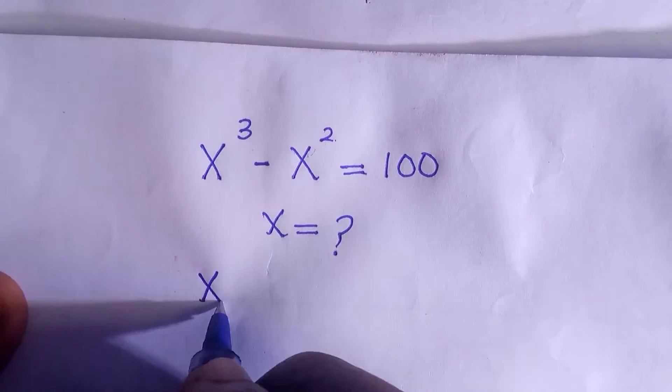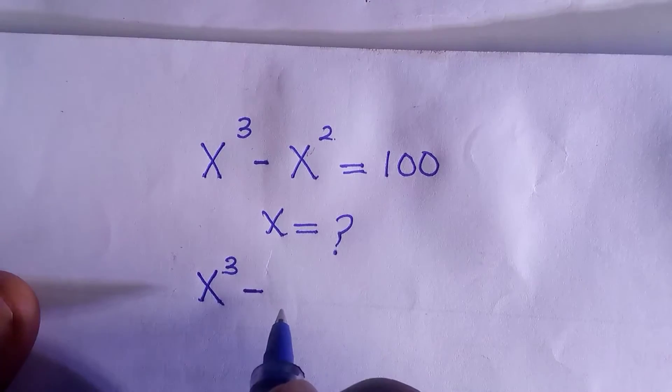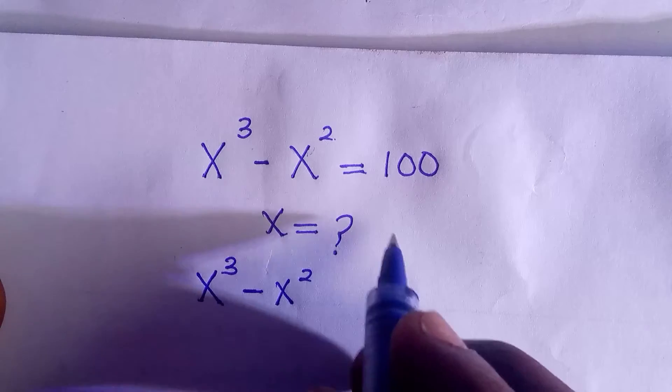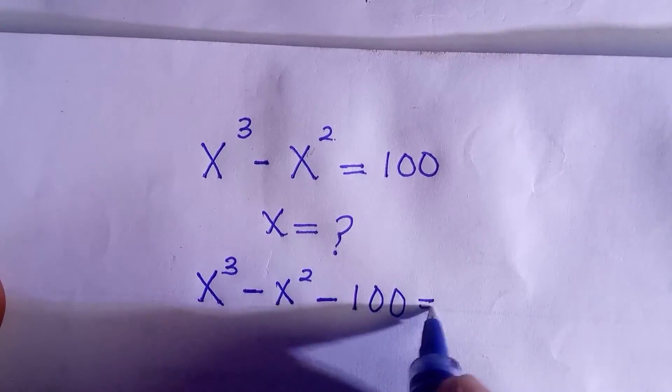To start with, we have x to the power of 3 minus x to the power of 2, and by taking out the hundred we have minus 100 and everything equals to 0.